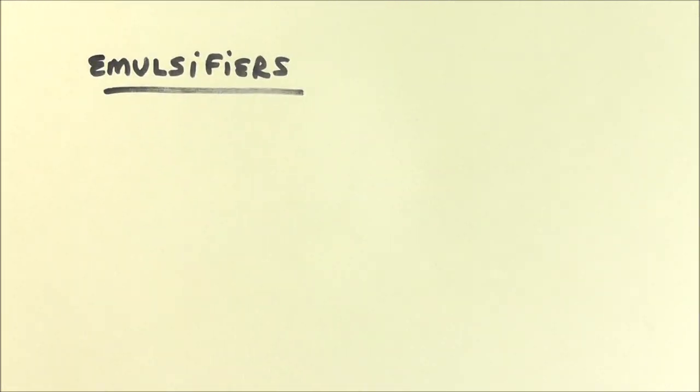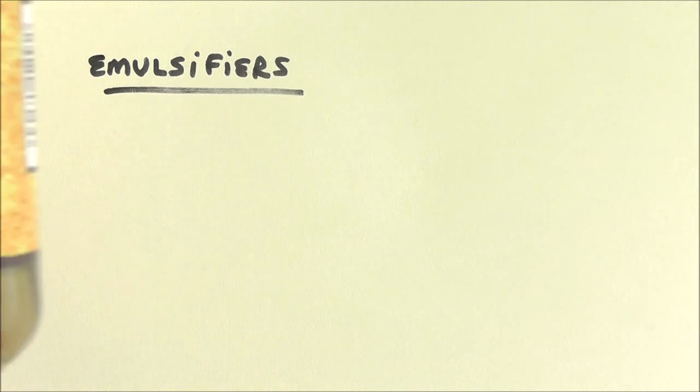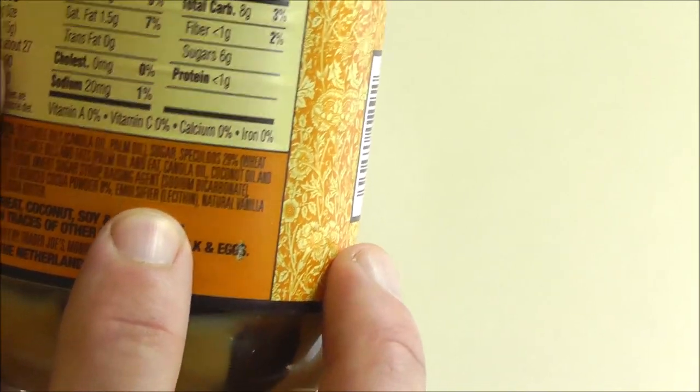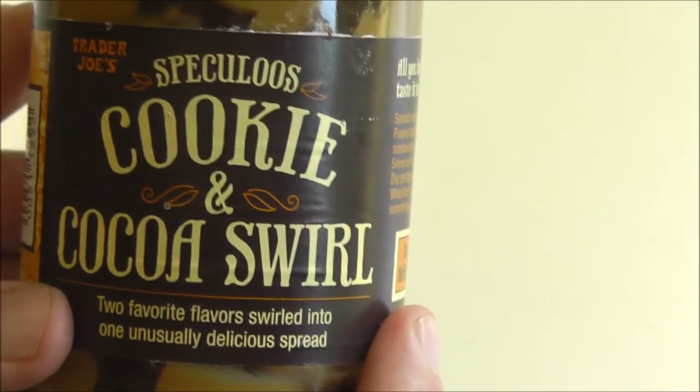I wanted to talk about things that touch your life. Emulsifiers are substances that cause things to mix that don't normally do so. You'll sometimes see 'emulsifier' right on the label — like here on this jar of speculoos cookie and cocoa swirl. If you make mayonnaise, it's egg whites and oil — does that stay mixed together indefinitely? No. They put emulsifiers in there. A lot of emulsifiers are called lecithins, and a great example of an emulsifier is soap. Here is the structure of sodium stearate, one of the components of soap.